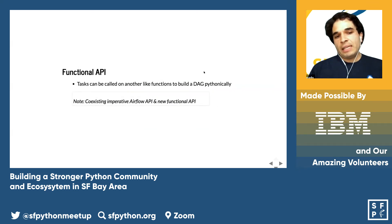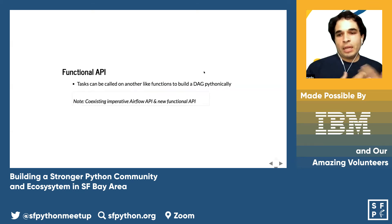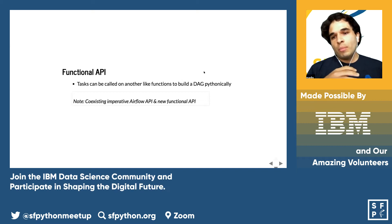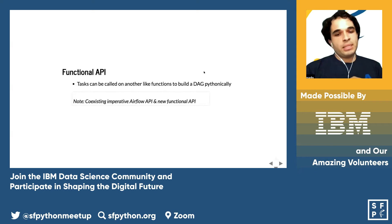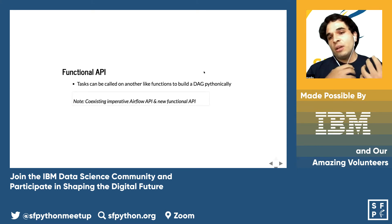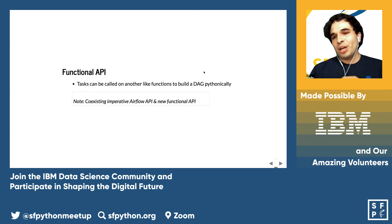Prefect has a functional API in comparison to the more imperative API that Airflow might have. One can build DAGs, or directed acyclic graphs, to create a workflow, and it's all Python-based. With the mention of it having a more functional API, it also has this imperativeness to it as well, probably for the sake of adoption purposes for users transitioning to Prefect.